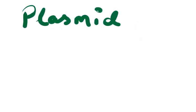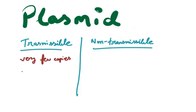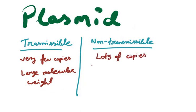Our last topic is plasmid. Plasmid is extra-chromosomal, double-stranded, circular DNA molecule capable of replicating independently. There are two types of plasmid: transmissible and non-transmissible. The transmissible are very few copies and large molecular weight which transmit from one vector to another during conjugation. The non-transmissible are smaller in molecular weight and large number of copies per cell.